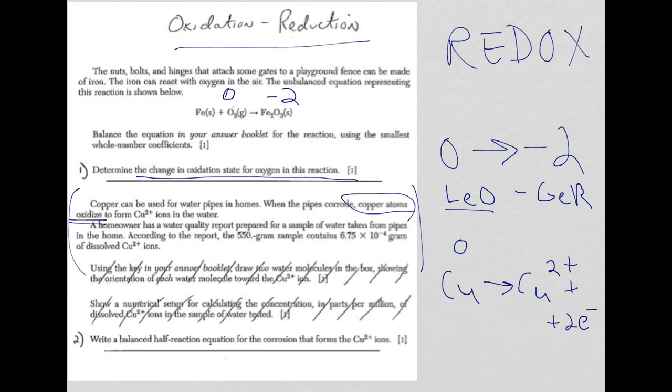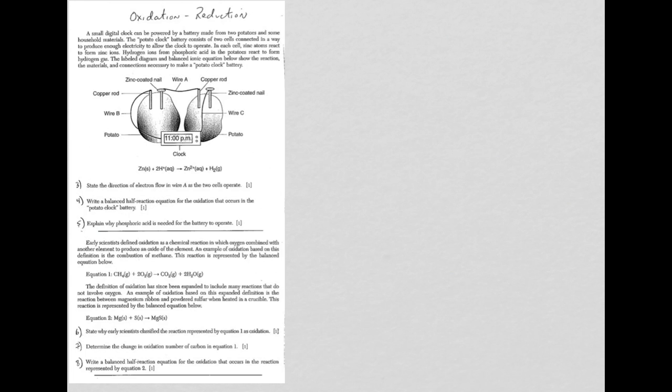So, let's take a look at question three. Actually, we're going to look at three, four, and five, because they are associated here with this reading passage, our potato clock and the potato clock picture. All right. So, for question three, it says, let's just state the direction of electron flow in the wire when the two cells are operating. Okay.